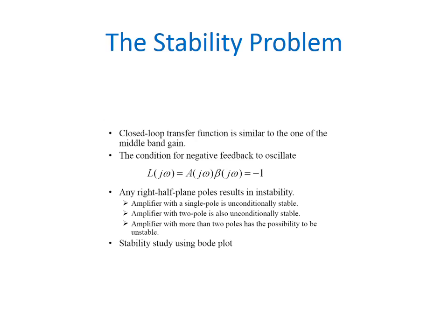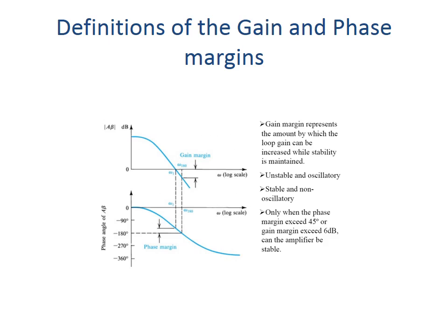Stability study can be studied using Bode plot. Gain and phase margin. The gain margin represent the amount by which the loop gain can be increased while the stability is maintained. Unstable and oscillatory. Stable and non-oscillatory. Only when the phase margin exits 45 degree or gain margin exits 6 decibel can the amplifier be stable.